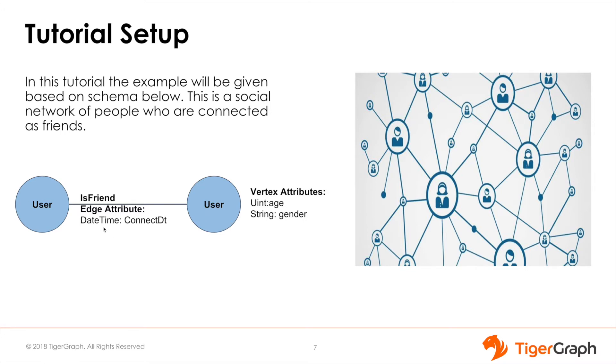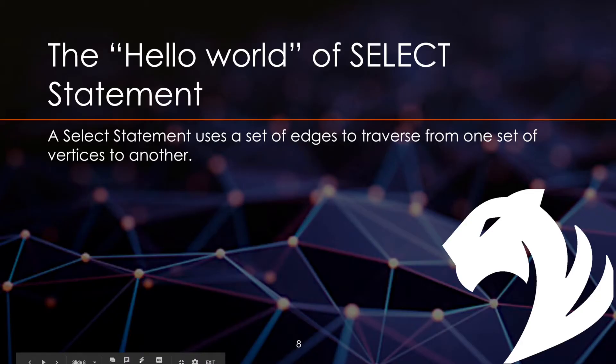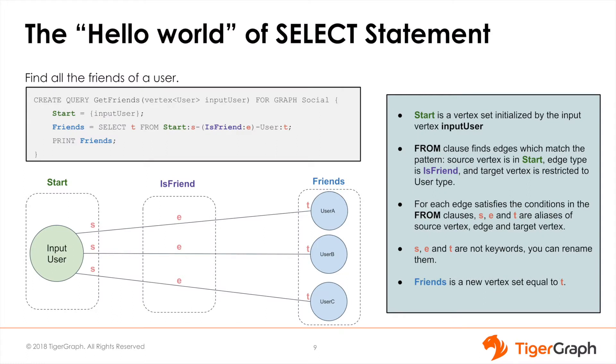Let's move on to the SELECT statement. Each SELECT statement uses a set of edges to traverse the graph from one set of vertices to another. Using the setup I just introduced to you, let's perform a simple traversal to find all the friends of a specific person.